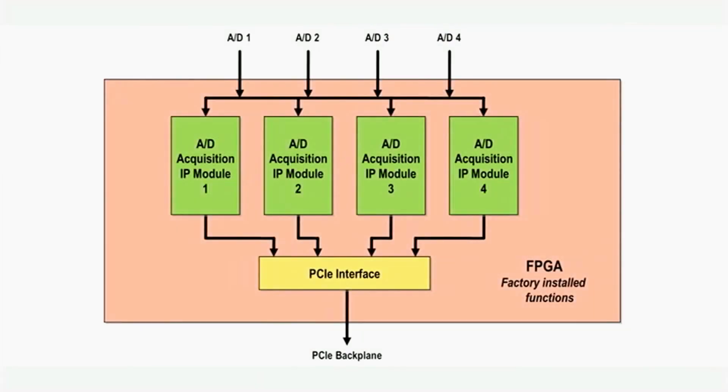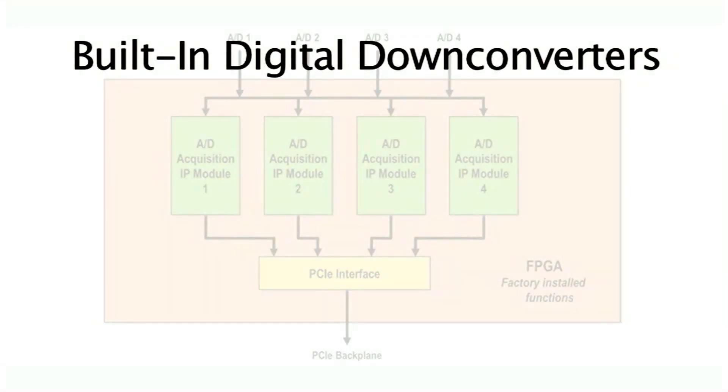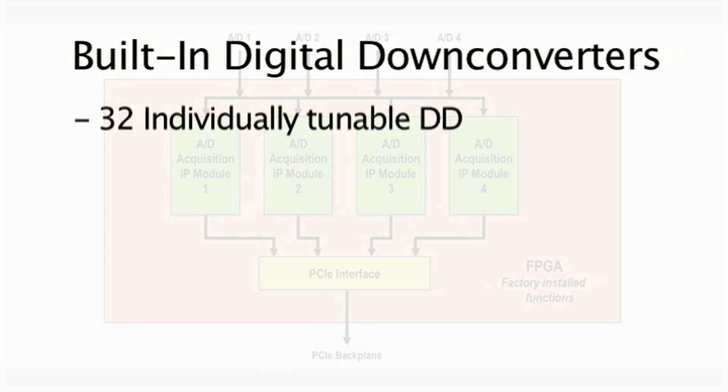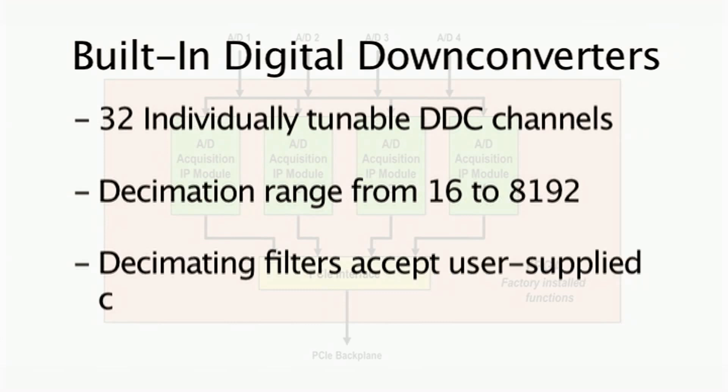Another key feature of the 53662 are the built-in digital down-converters. Each acquisition module contains an 8-channel multiband DDC for a total of 32 individual tunable down-converter channels. The DDC core in each module has a decimation range from 16 to over 8,000, and its decimating filters can accept user-supplied coefficients to fine-tune the core to your specific application.